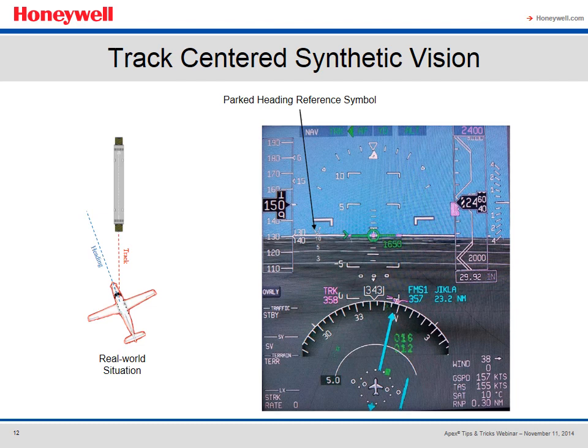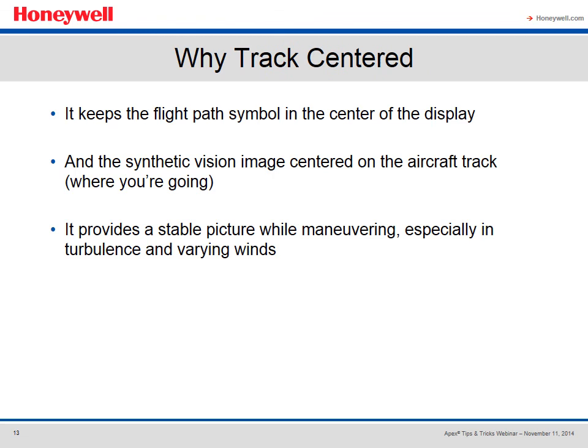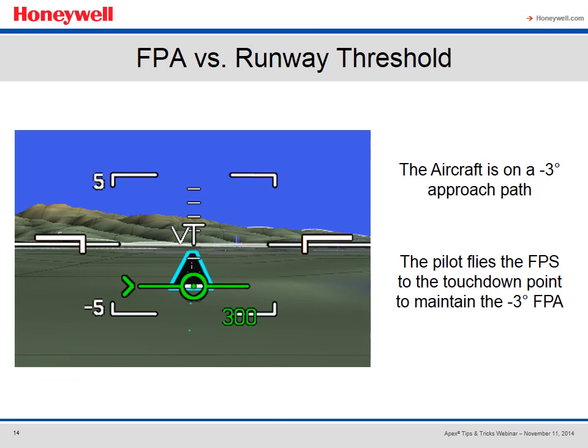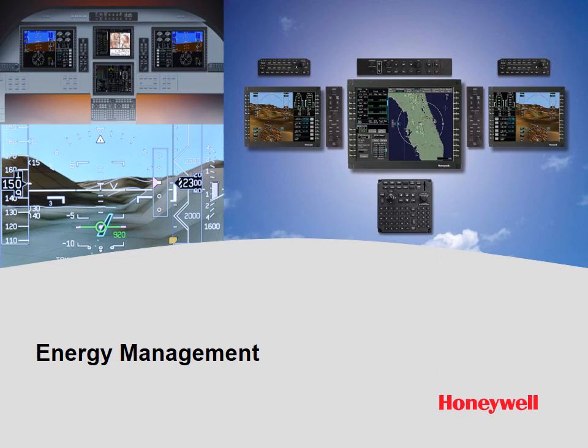One big difference between SmartView and other systems is that it's a track-based system — the image is centered around where you're going, your track, not where you're pointed, your heading. We indicate the aircraft's heading on the display so you can visualize your crab angle. This keeps the flight path symbol centered on the aircraft's track and provides a very stable picture, because your track doesn't change in turbulence or varying wind conditions whereas your heading certainly does. Here we have the flight path symbol on the runway touchdown point, on the three degree tick mark — so we are flying a three degree flight path angle to the touchdown point, and we can confirm terrain clearance.